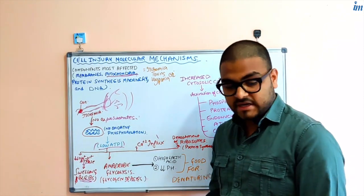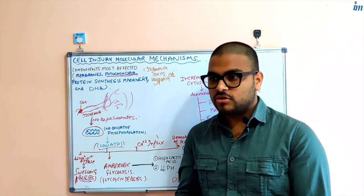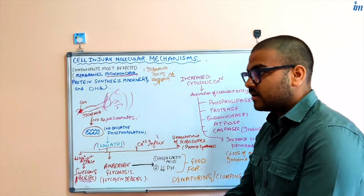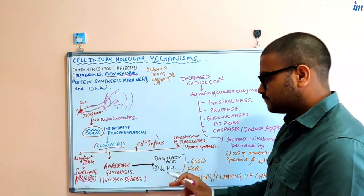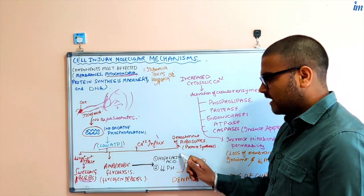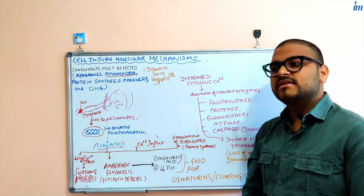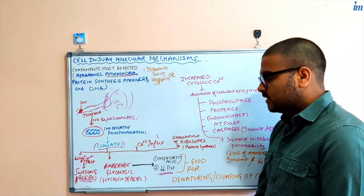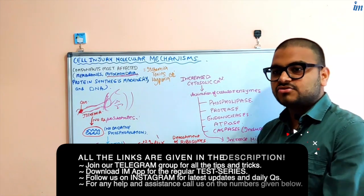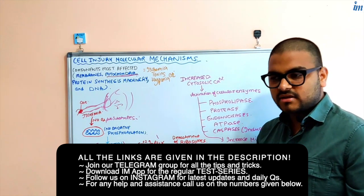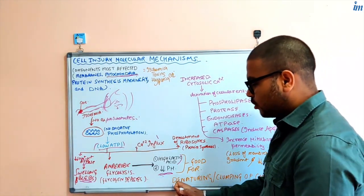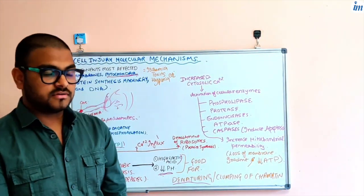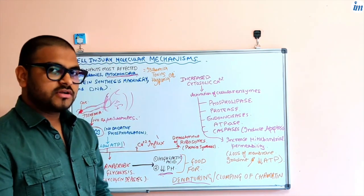Low ATP - the cell will turn to anaerobic pathway for glycolysis. If you are using the anaerobic glycolytic pathway, there will be less ATP production but along with it you will have production of lactic acid. Because of lactic acid production the pH of the cell decreases. Decreased pH is not good because to maintain its homeostatic function the cell needs a constant pH. This pH decrease causes denaturation of various cellular proteins and also denaturation and clumping of the chromatin and DNA.